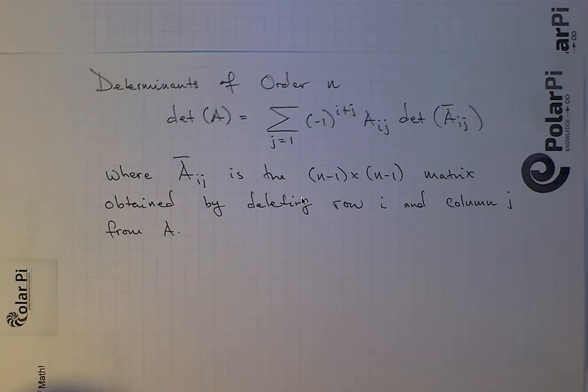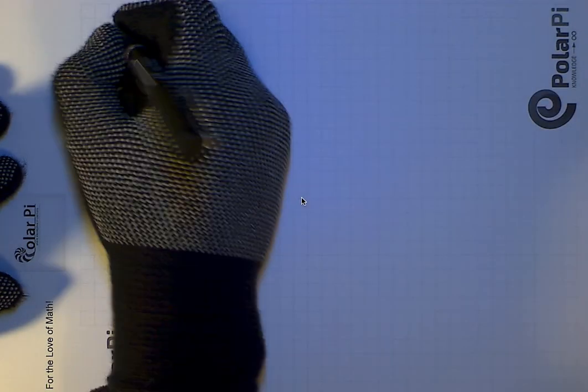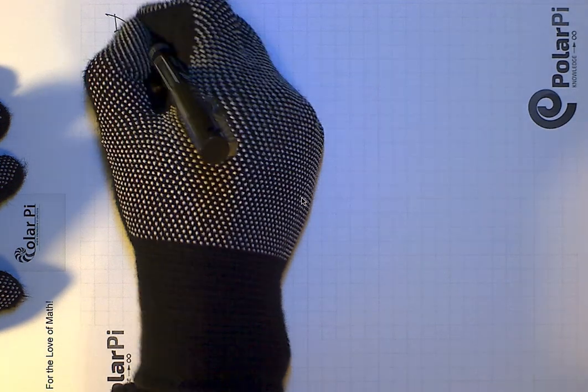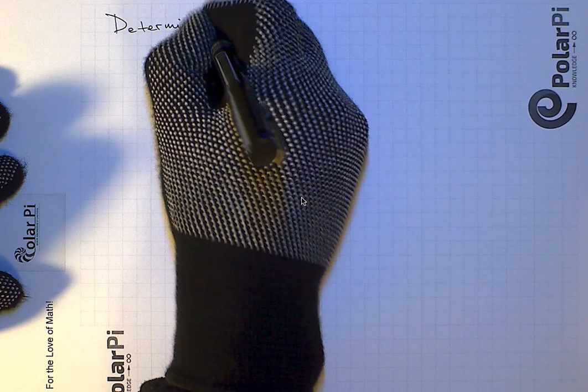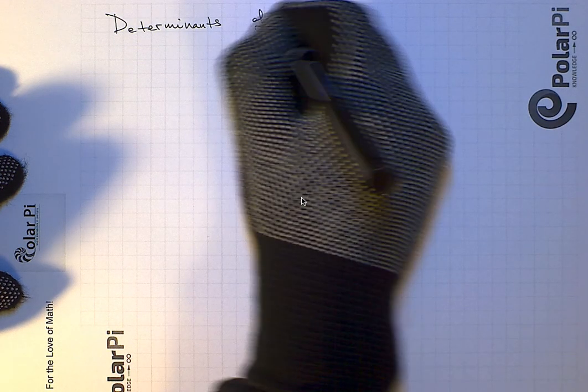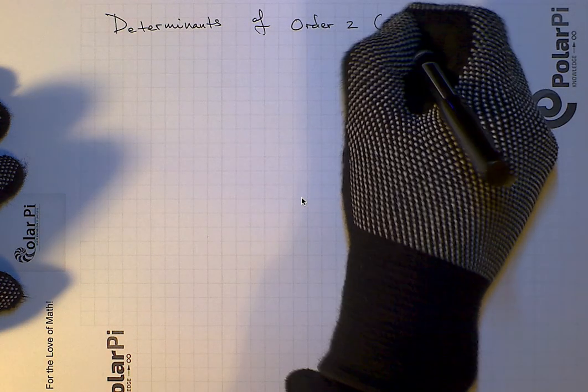But in this video let's concentrate on determinants of order 2, that is 2x2 determinants. So, determinants of order 2. And again, this means 2x2 determinants, order 2, so 2x2.